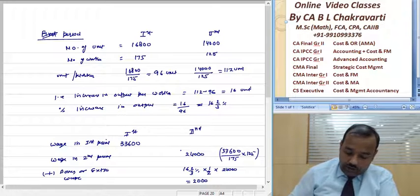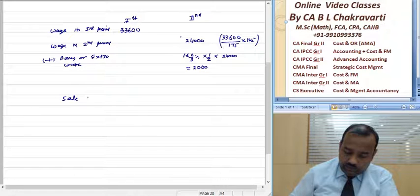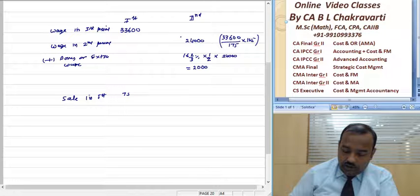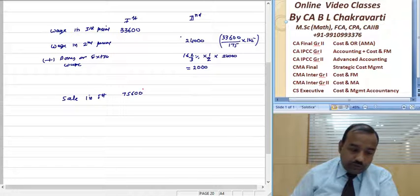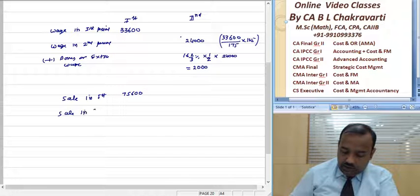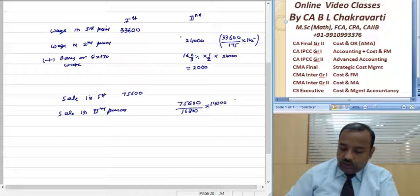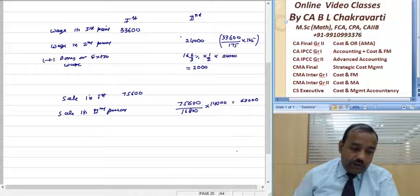Now we'll write sale. In the first period, it was 75,600. So sale in the second period, what happened? In the first period it was 16,800 units. So, in the second period, it was 63,000.